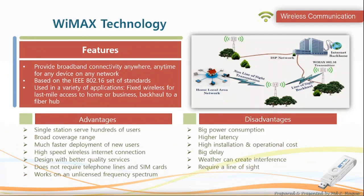WiMAX provides broadband connectivity anywhere at any time for any device on any network. It is based on IEEE 802.16 set of standards. It is used in applications like fixed wireless for last mile access to home or business, and backhaul to a fiber hub. Main advantages are high-speed wireless internet over a broad coverage area, the ability to serve hundreds of users from a single location, faster deployment, better quality services, operation on unlicensed frequency spectrum, and no need for telephone lines or SIM cards. Disadvantages include big power consumption, higher latency, delay, interference, high cost, and requiring line of sight.